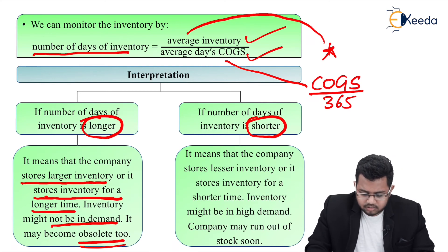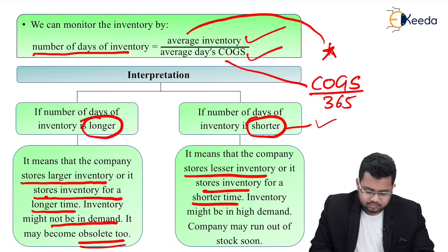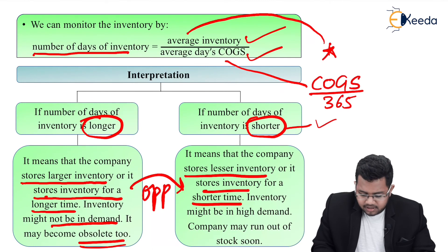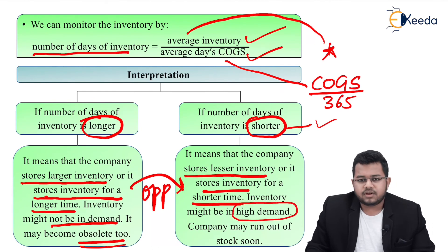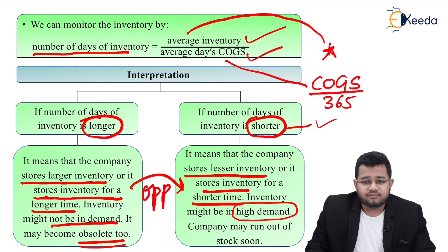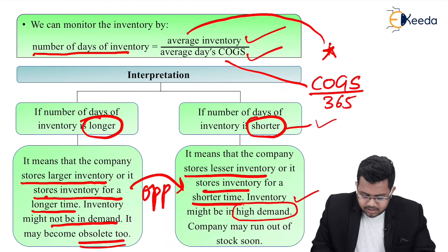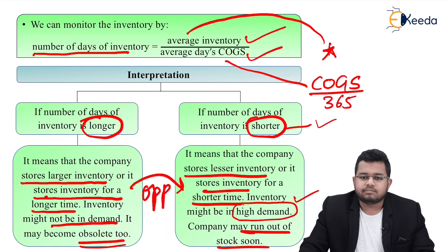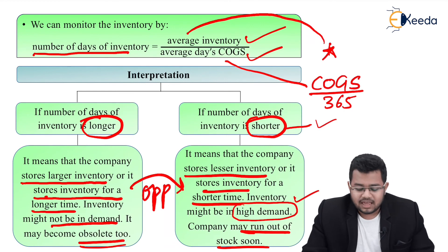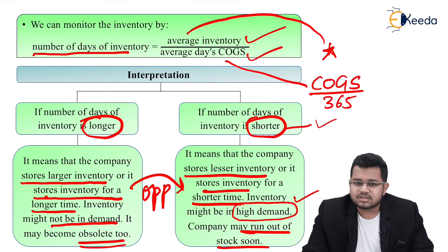On the opposite side, if the number of days of inventory is shorter, it means the company stores lesser inventory or stores it for a shorter time. Inventory might be in high demand — if the number of days is just 3 or 4 days, the product is fast-moving. The company may run out of stock soon, so production or acquisition should be fast enough to match sales.